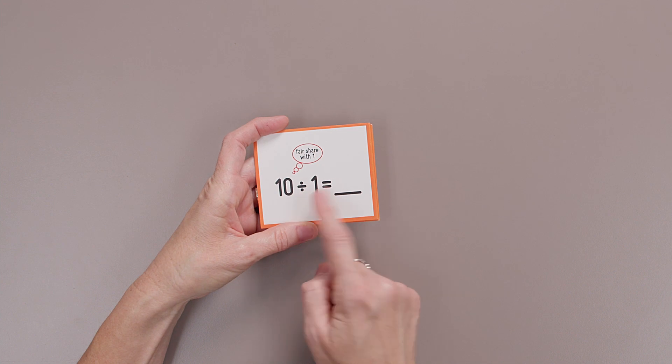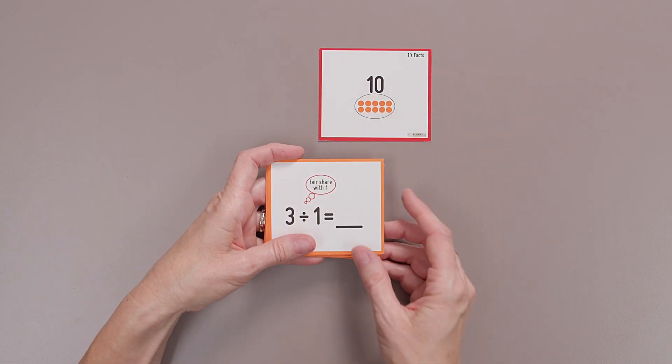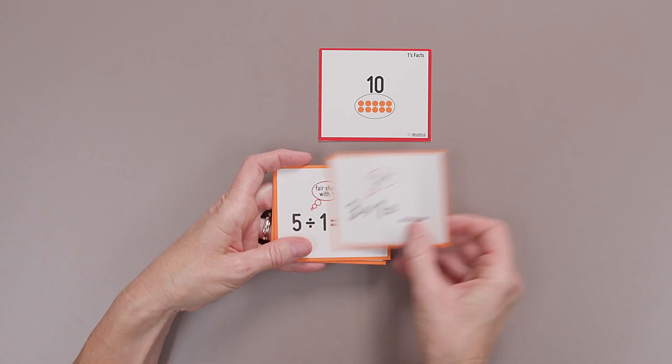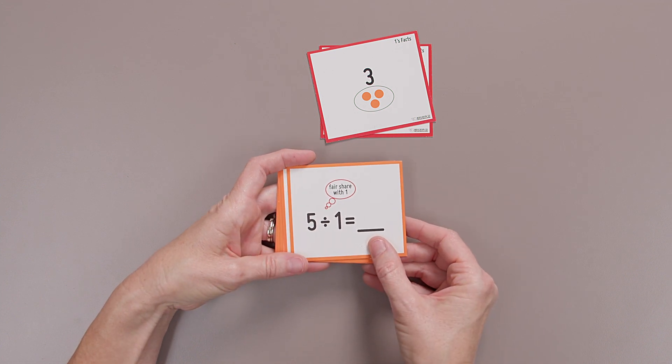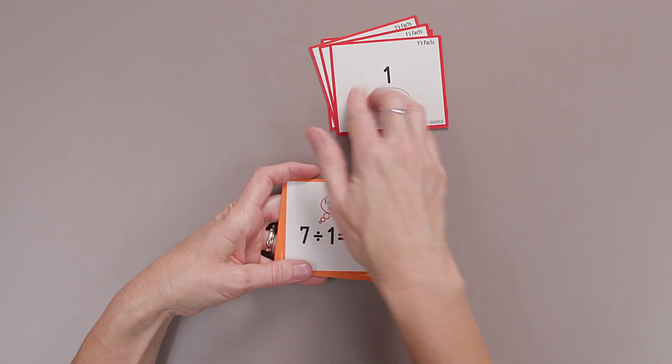And then our last one, our dividing with one. Ten. Fair share into one group. How many is in that one group? Ten. Three divided by one. How many is in that one group? Three. Five divided by one? Five. One divided by one. One. One.